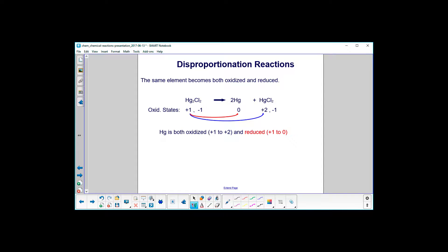Disproportionation reactions, that's when the same element, and in this case that's going to be mercury, becomes both oxidized and reduced.